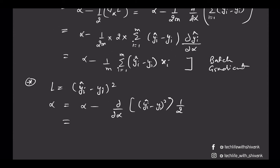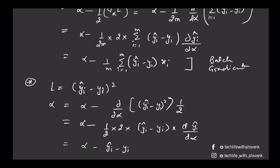This simplifies to alpha minus (1/2) times 2 times (y_i-hat minus y_i) times the derivative of y_i-hat with respect to alpha, which equals alpha minus (y_i-hat minus y_i) times x_i.